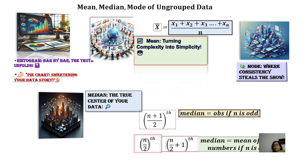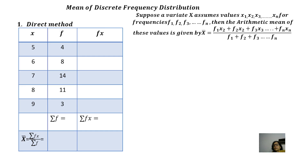Now we move on to discrete frequency distribution. Here we have discrete values — for example, marks in one column and their frequencies in a second column. So if the mark is 5, four children are securing 5 marks; eight children are securing 6 marks; 14 are securing 7; 11 are securing 8; and so on. When we get data in this form, we call it discrete frequency data.